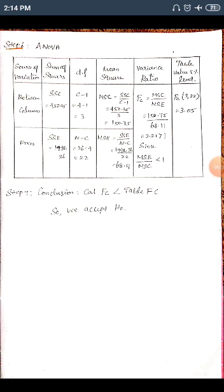For the Error row: SSE = 1498.36, degrees of freedom = N − c = 26 − 4 = 22. Mean Square of Error (MSE) = SSE / df = 1498.36 / 22 = 68.11.